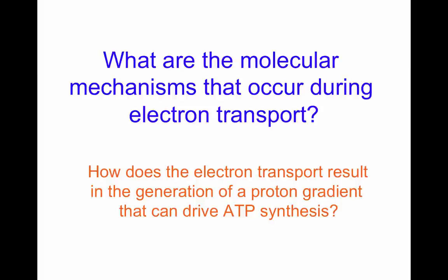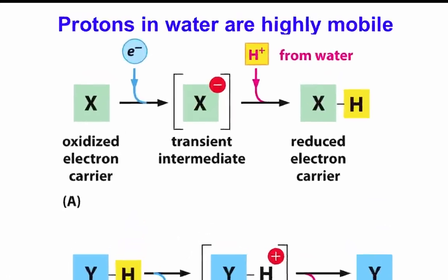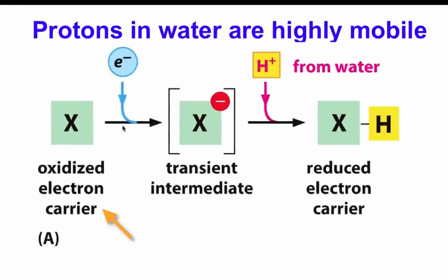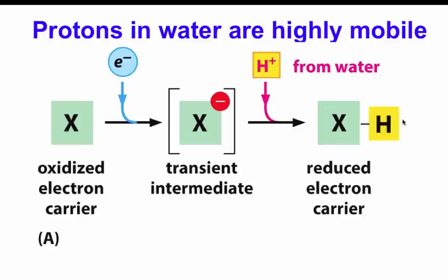What are the molecular mechanisms that occur during electron transport, and how does electron transport result in the generation of a proton gradient that can drive ATP synthesis? An oxidized electron carrier X will be able to accept an electron, going through a transient negatively charged intermediate. That transient negative charge intermediate will be able to take a proton from water, therefore becoming completely reduced as a molecule with a proton attached to it — shown here as X with the proton.